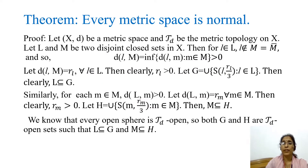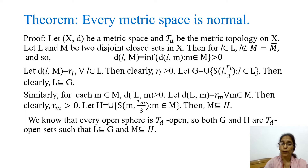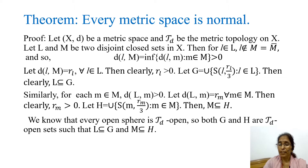The theorem is: every metric space is normal. Let us prove this theorem. Let (X, d) be a metric space and T_d be the metric topology on X. Recall that the metric topology on X is the collection of all subsets G of X such that G is a neighborhood of each of its points — that is, for each point in G there exists an open sphere with that center contained in G. We have to prove that (X, T_d) with the metric topology is a normal space.